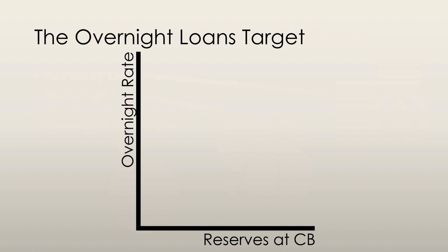Let's see how the central bank manipulates this thing known as the overnight loans rate. This graph shows the relationship between the overnight loans rate and the bank reserves that are held at the central bank. We're going to assume that the zero axis is a bit further to the right than on other graphs — at the grey line, there are zero reserves at the central bank.